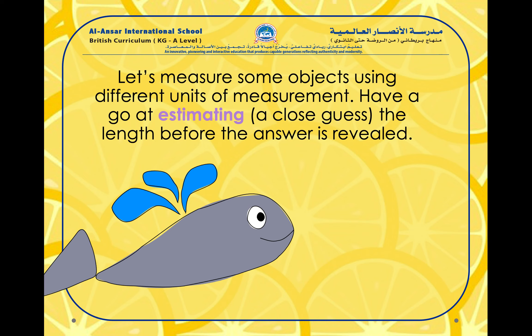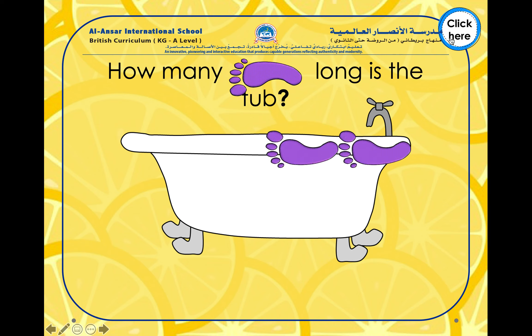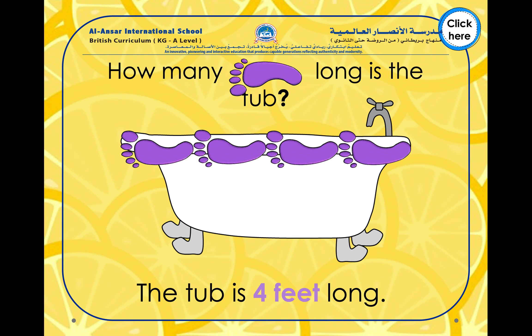Let's measure some objects using different units of measurement. You can have a go at estimating the length before the answer is revealed. Let us see how many feet long the tub is — can you guess? One, two, three and four. The tub is four feet long. Here we can see that we followed all the rules of measurement: we used the same object, no spaces in between, and the same size.